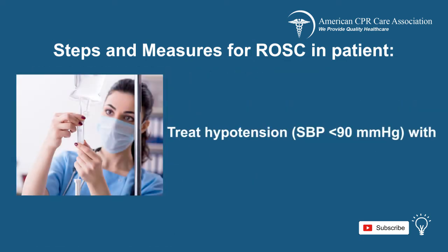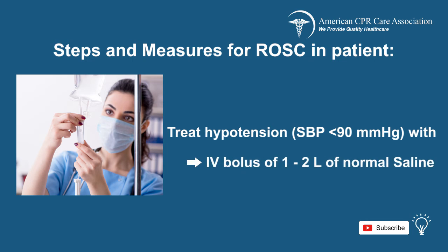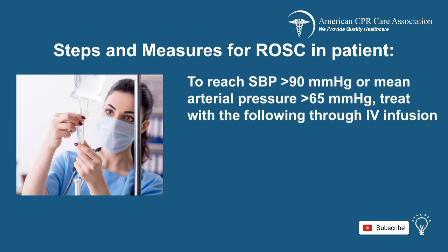If the patient's blood pressure is very low with a systolic blood pressure, or SBP, less than 90 mmHg, then you treat hypotension by doing the following. Administer an IV bolus of 1-2 liters of normal saline to reach either an SBP of greater than 90 or a mean arterial pressure of over 65, and administer the following via IV infusion.